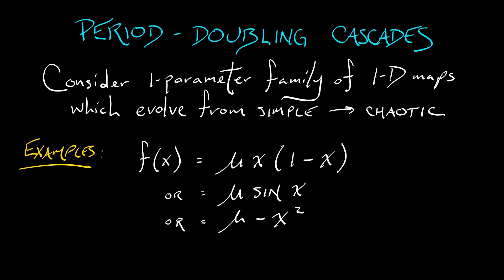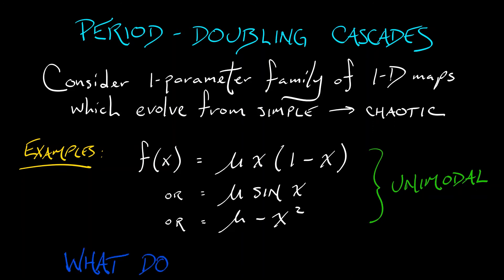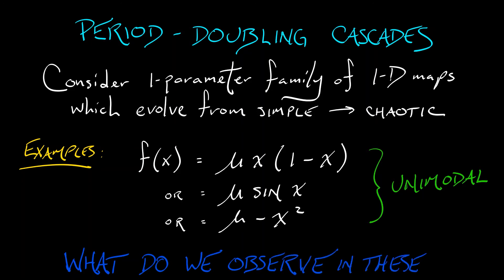These are all examples of what we might call unimodal functions. Within the domain of interest, they just have a single, simple maximum. Now what do we observe with these unimodal functions as we increase the values of mu? Well, let's take a look.